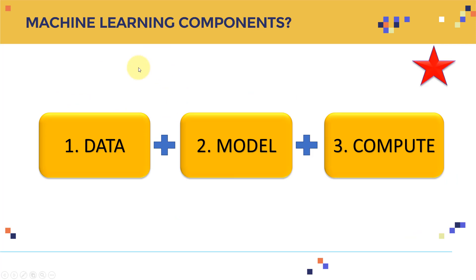From a machine learning perspective as we integrate to AWS, there are three main components needed to build any machine learning system. First, I need my model — a deep learning model, a machine learning model, an artificial neural network, or whatever. This model is useless without data. Machine learning is hungry for data; the more data you have, the better the models you can train and generalize. And you need to train the model with that data on something — you need compute power, you need GPUs, you need CPUs.